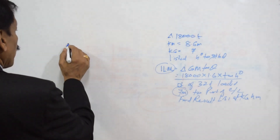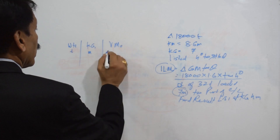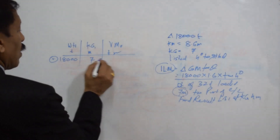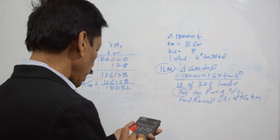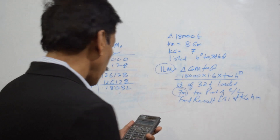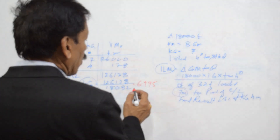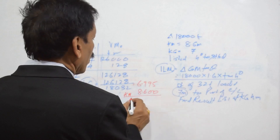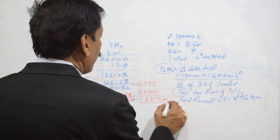Once we have loaded this weight at a KG of 4 meters, we do KG by moment calculations — weights in tons, KG in meters, vertical moment in ton-meters — with the first line being the displacement at a KG of 7 meters. The final KG comes to approximately 6.995 meters. Assuming KM does not change for the small operation, KM is 8.6 meters, so the new GM is 1.605 meters.